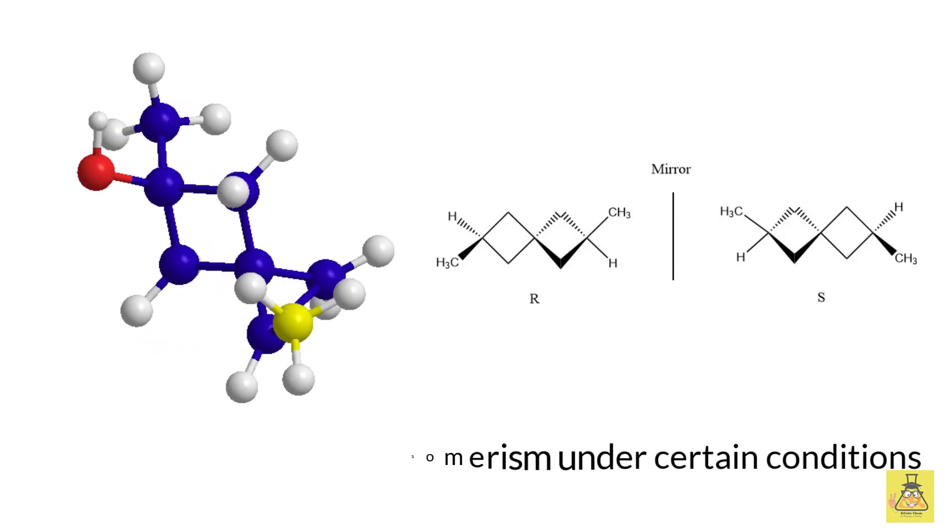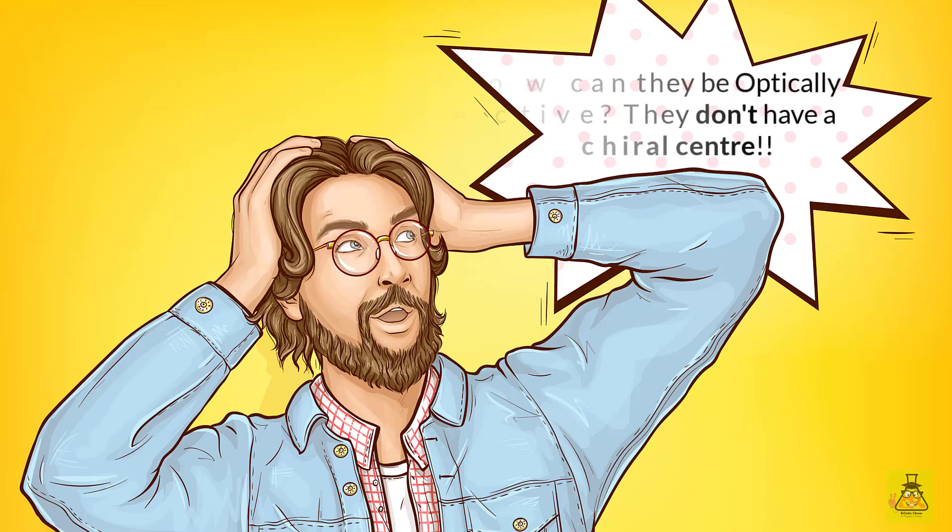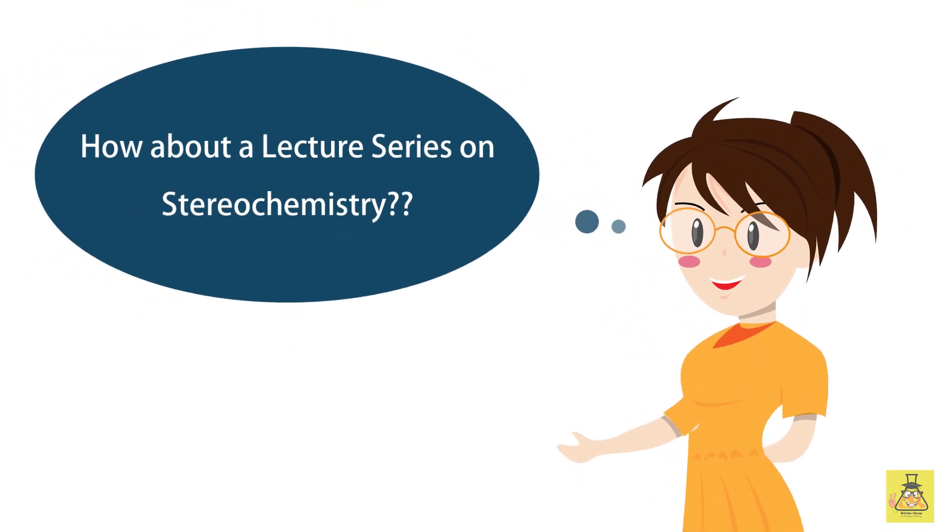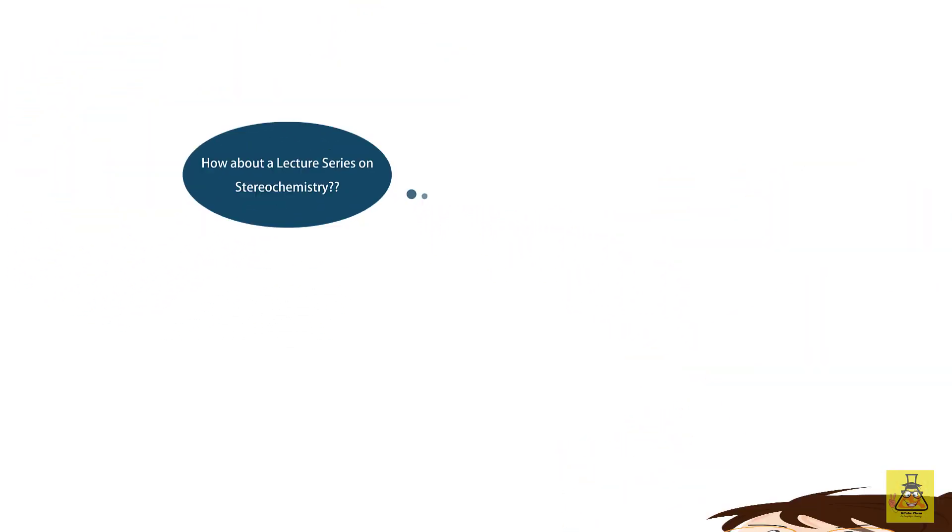One interesting fact to note is that they find so many applications in medicinal chemistry due to their optical activity. Well yes, you heard me right. Spirals can show optical isomerism even in absence of a chiral center due to molecular chirality.